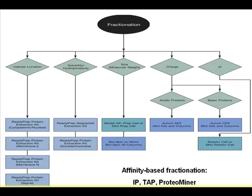A big part missing from this chart is affinity-based fractionation. Immunoprecipitation is actually a good way to enrich just the proteins of your interest — directly interacting with your target protein — and put them in 2D gels to display. TAG affinity purification is another option if you have an expression system: express your tagged proteins in E. coli, mammalian cells, or other cell cultures, then use a TAG antibody to pull down your target protein together with the proteins that interact with it.